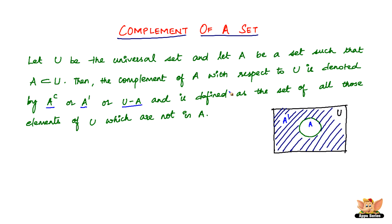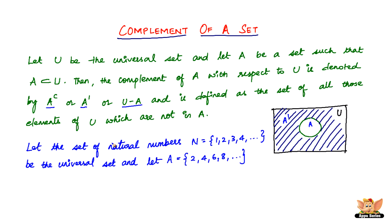Before we conclude this video, let us look at an example to understand the complement of a set a little more. Let the set of natural numbers N = {1, 2, 3, 4, ...} be the universal set, and let A = {2, 4, 6, 8, ...}. If you notice, the set A is nothing but the even numbers.